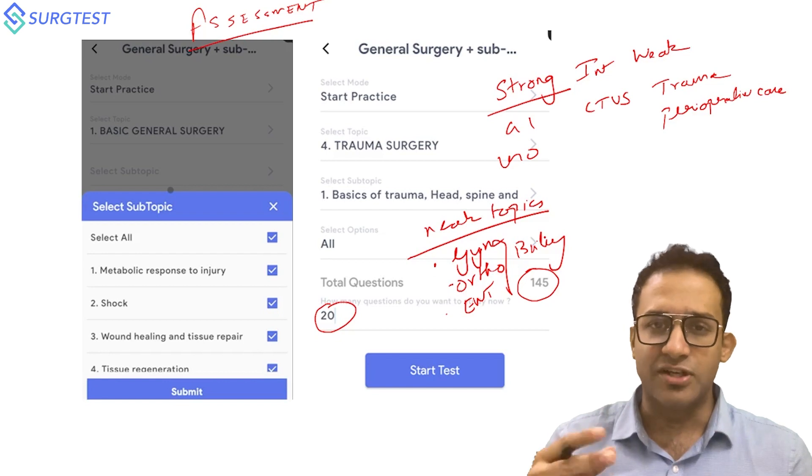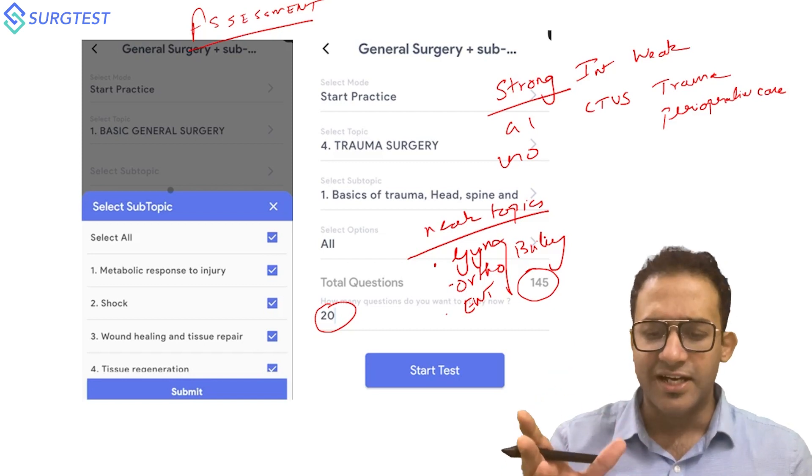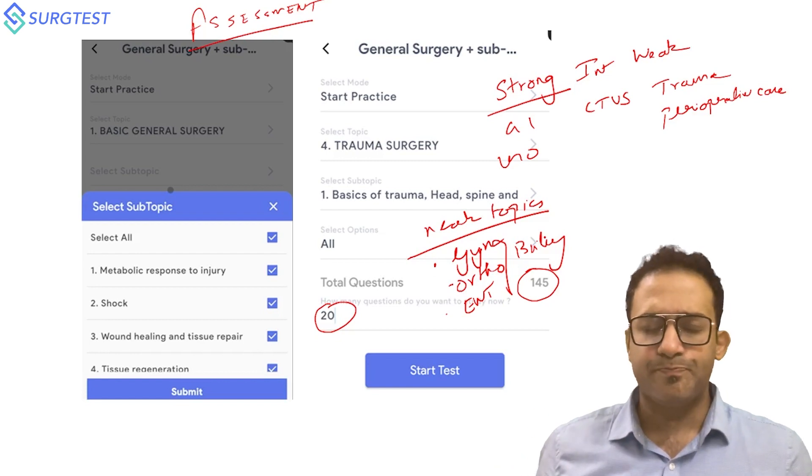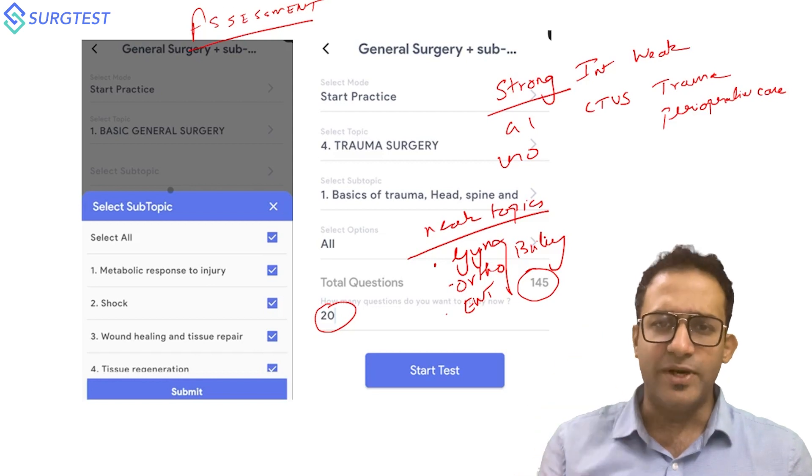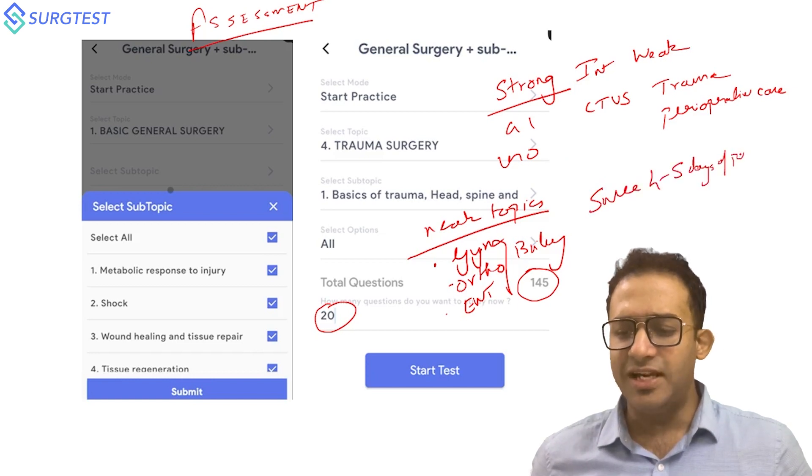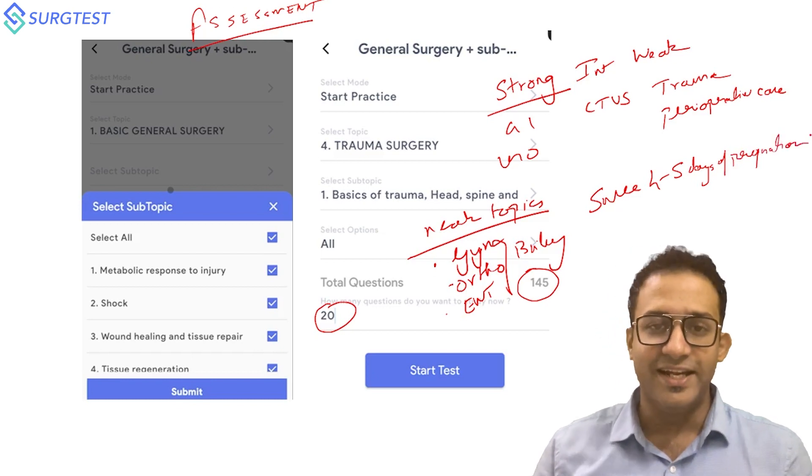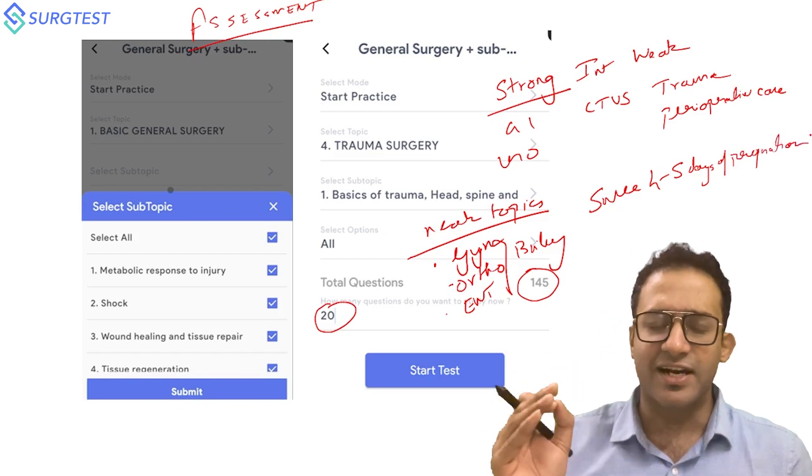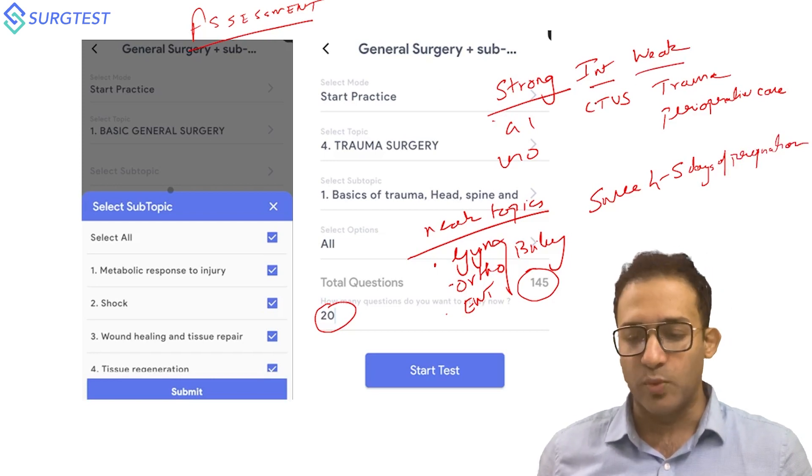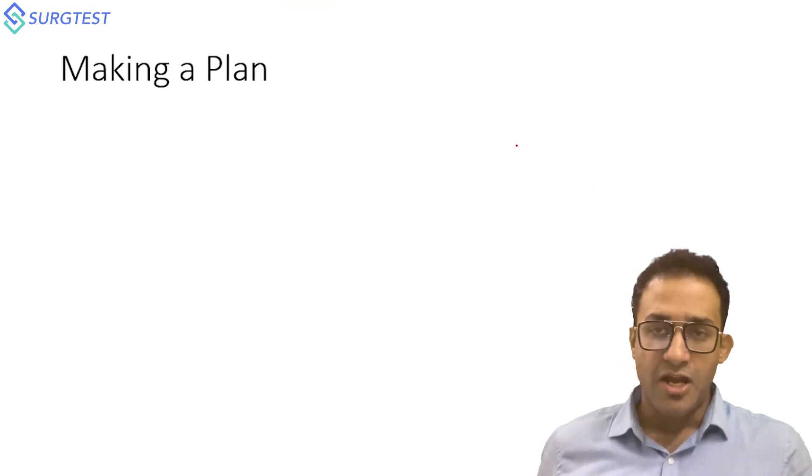The best way to overcome this particular weakness is to use videos. On the SurgTest app, general surgery video lectures are available at a very affordable cost. You can see the gynecology video - the entire gynecology video is less than one and a half to two hours. Orthopedics is again two to three hours, same with ENT. When you finish seeing the videos of these topics, you effectively save at least four to five days of preparation. It's not that these topics are difficult, it's just that most of us have never read these topics once in our life. After you make this plan - strong, intermediate, and weak - that is when you should start getting into your preparation.